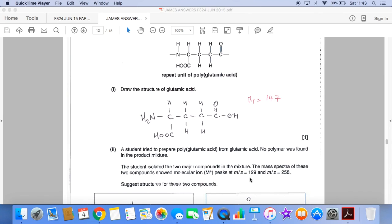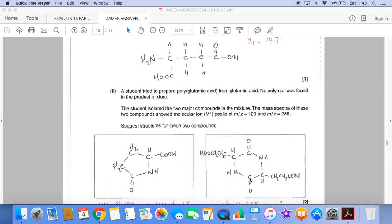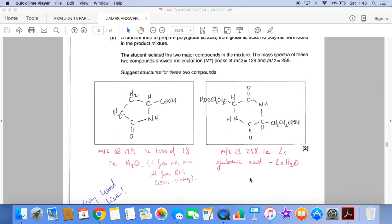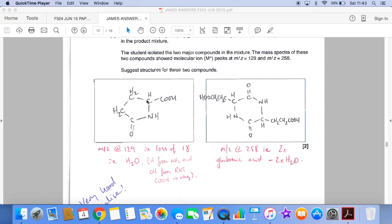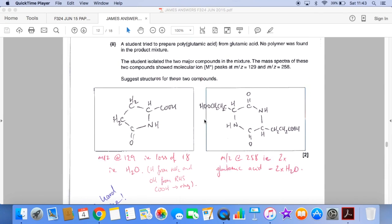So we've lost 18, a mass of 18. So what's happened is we've formed a ring structure by taking the OH from the carboxylic acid group, which would have been here, and the H from the NH2 group. And it's just coiled round, and this carbon and nitrogen are actually joined together.